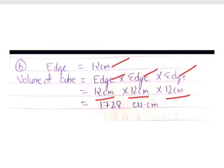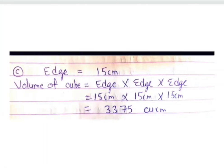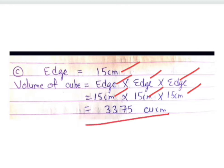12 × 12 is 144, and 144 × 12 gives 1728 cubic centimeters. Remember, cubic centimeters is the unit for volume. In part C, the edge is 15 centimeters. Volume of the cube is edge × edge × edge, so 15 cm × 15 cm × 15 cm.